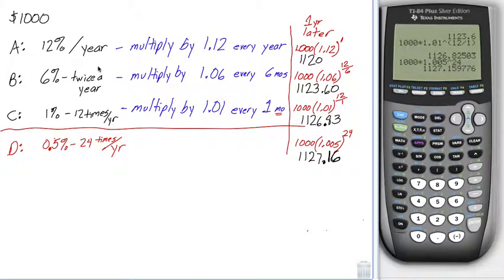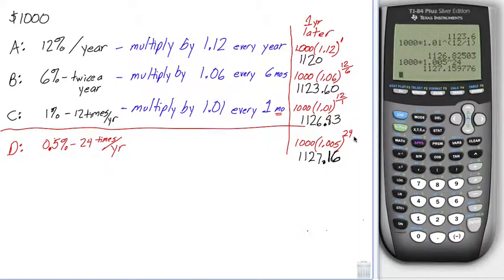If we were looking at banks that offer different interest rates equivalent to 12% per year but compound them at different times — once per year at 12%, twice per year at 6% each time, or 1% twelve times per year — we get different amounts at the end of a year: $1,120 if compounded once per year, all the way up to $1,127.16 if compounded 24 times per year.